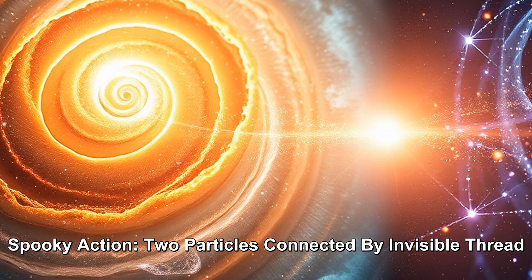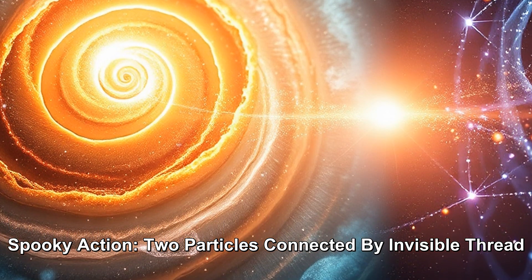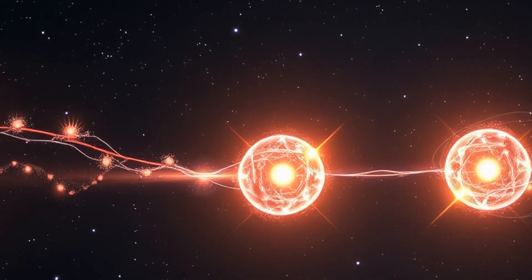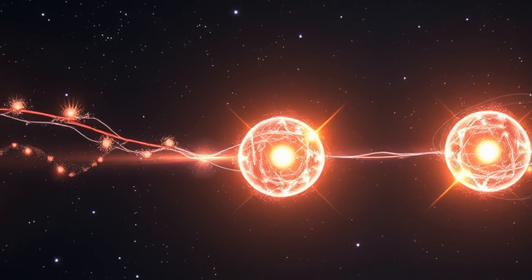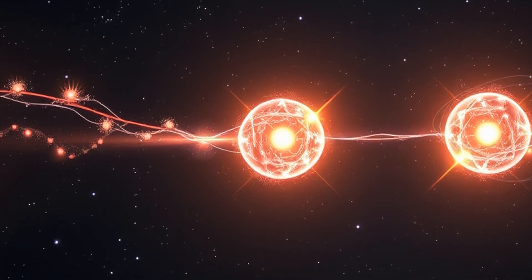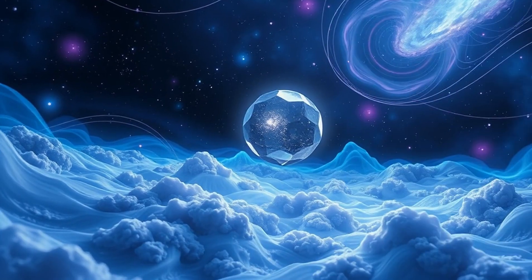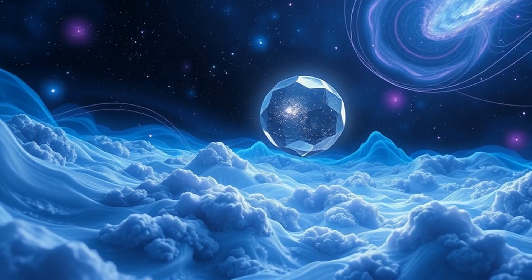Let's dive into one of the weirdest parts of quantum physics, quantum entanglement. Imagine two particles that are connected in such a special way that whatever happens to one instantly affects the other, no matter how far apart they are. Einstein called this spooky action at a distance because it seemed impossible.